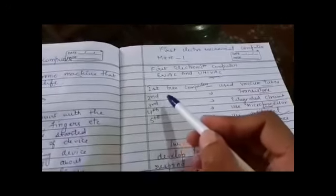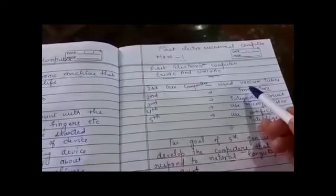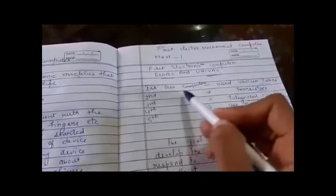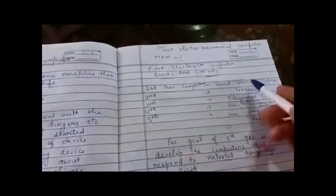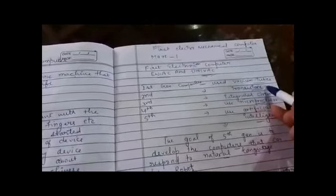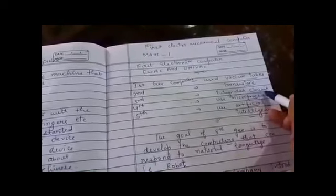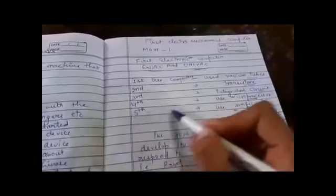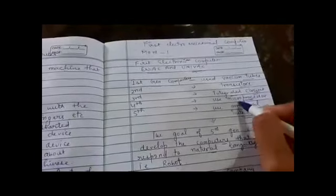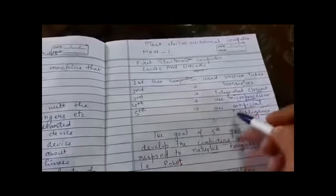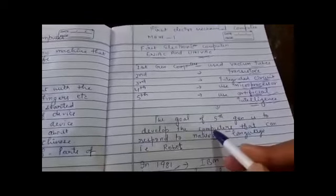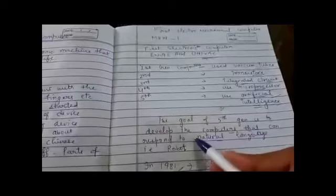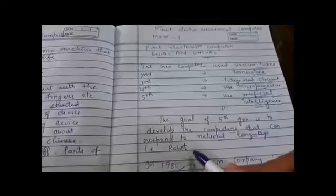Next, which things were used in first to five generations? First generation computers used vacuum tubes. Second generation computers used transistors. Third generation computers used integrated circuits. Fourth generation computers use microprocessors, and fifth generation computers use artificial intelligence. The goal of fifth generation is to develop computers that can respond to natural language, that is, robots.